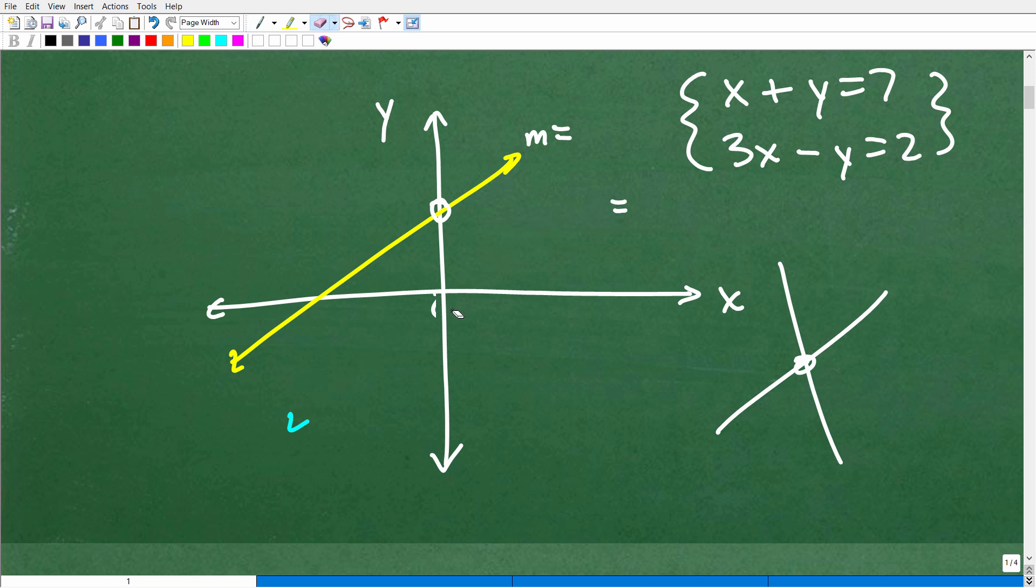And then there's one other scenario as well is where a system can have an infinite number of solutions. So, that is if you have one line and then another line that actually just sits right on top of that other line. Here, you have infinite many points of intersection.